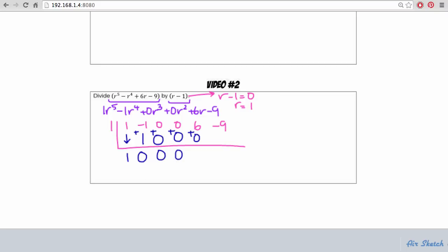Again, 1 times 0, 0, add down, 1 times 6 gives us 6, and then we'll add down.